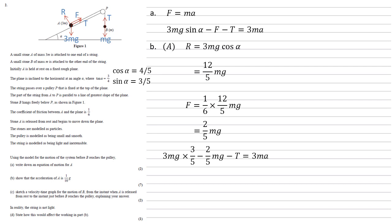We can now use these two fifths mg in the formula that we worked out in part A. So we know that three mg sine alpha, sine alpha is three fifths, minus the friction of two fifths mg minus t, the tension is going to equal three ma. Simplifying, we get nine fifths mg minus two fifths mg minus t equals three ma. Or we can bring those mg's together. So we've got seven fifths mg minus t equals three ma.